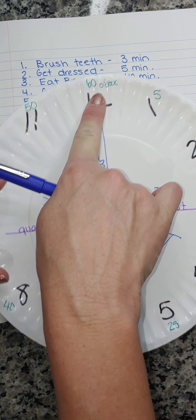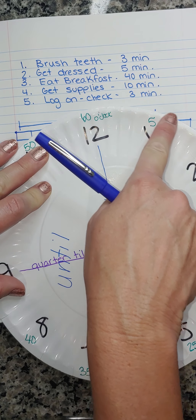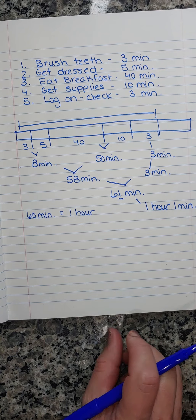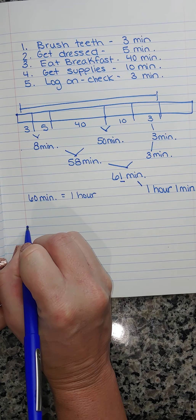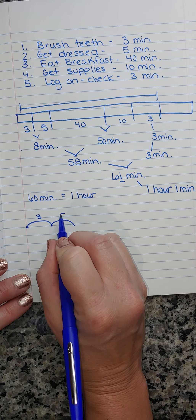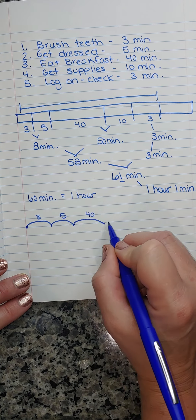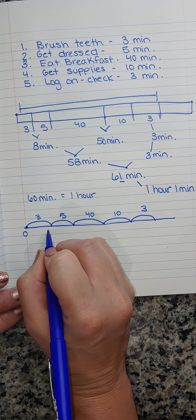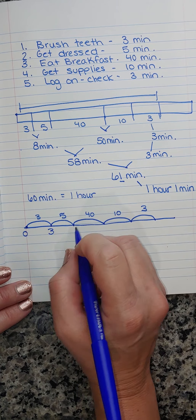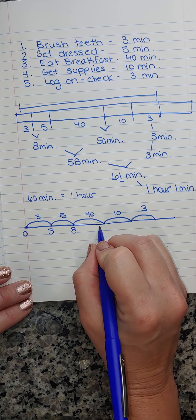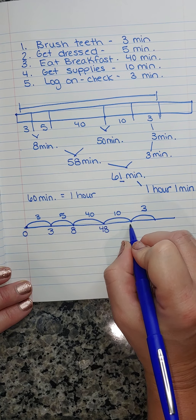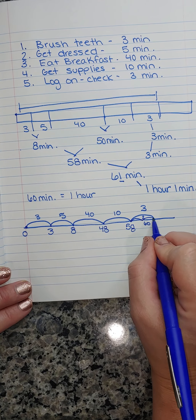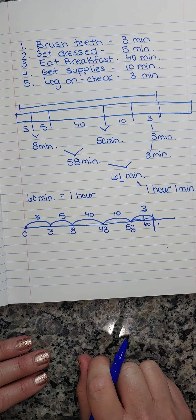I can also use my clock and count around — count 3 minutes, then go up 5 minutes, then count to 40, go up 10, go up 3 and see what happens. You can also do this on a number line. Starting at zero: I land at 3, then up 5 gives me 8, then jump 40 gives me 48, then jump 10 is 58. Break the last 3 into 2 and 1, which gets me to 60 and then one more. So here is my division between my hour and my minute.